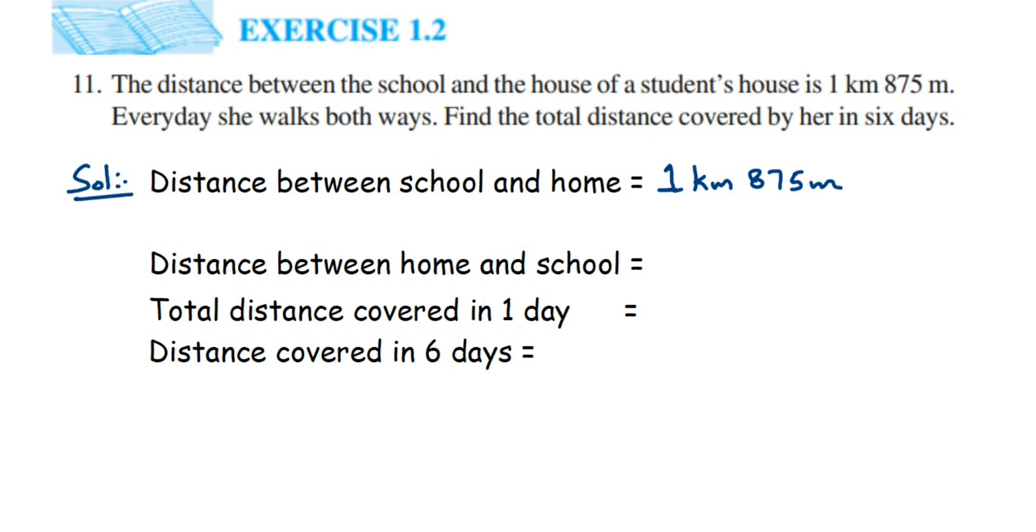We know that 1 kilometer equals 1000 meters. So this will be 1 kilometer is 1000 meters plus 875 meters, which equals 1875 meters.